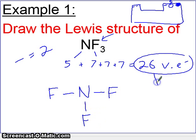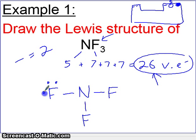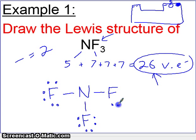We'll continue placing electrons around the outside atoms first — around fluorine — and count until we get to our total of 26. We place electrons around each fluorine, then once all outside atoms are filled, we come inside and fill the inner atom, giving us 25 and 26. Our 26 valence electrons have been completely distributed.